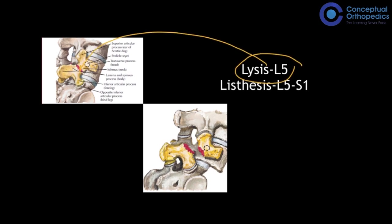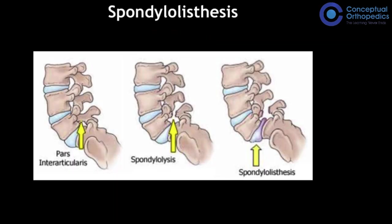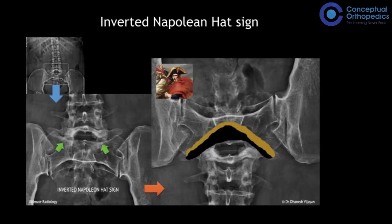Spondylolysis at L5 is followed by the slip of one vertebra over the other, called spondylolisthesis, which occurs most importantly between L5 and S1. As the slip progresses, one vertebra comes over the other and on the AP view it looks like an inverted Napoleon's hat — called the inverted Napoleon hat sign — seen in end-stage spondylolisthesis.